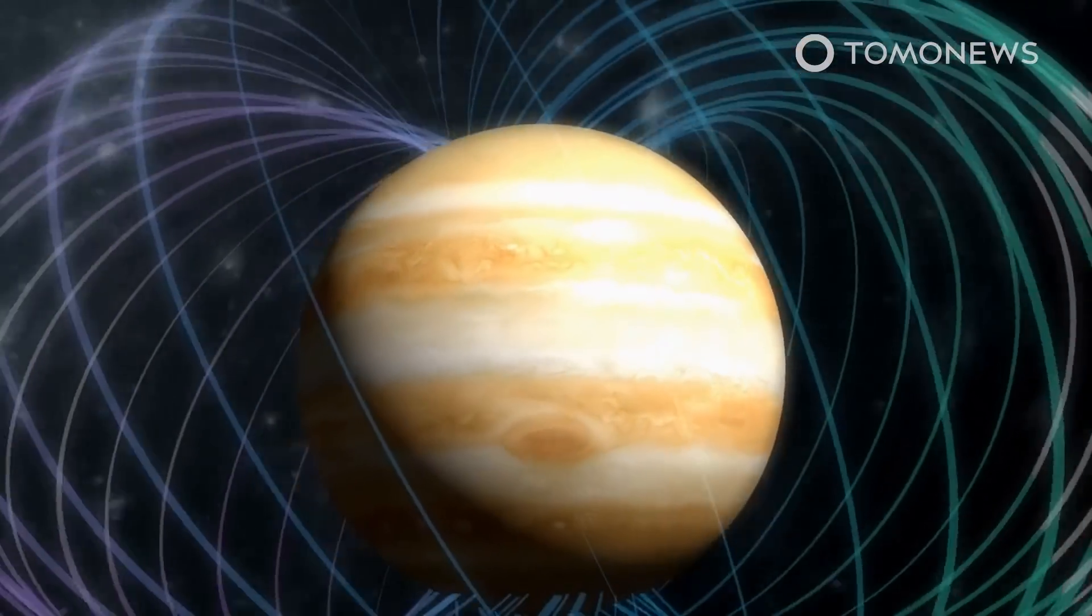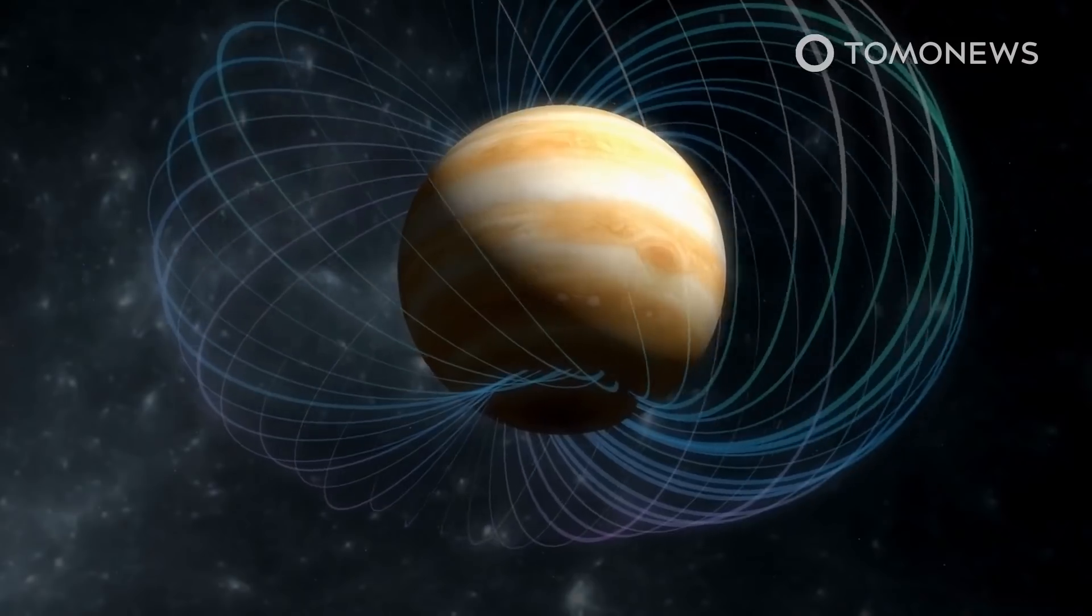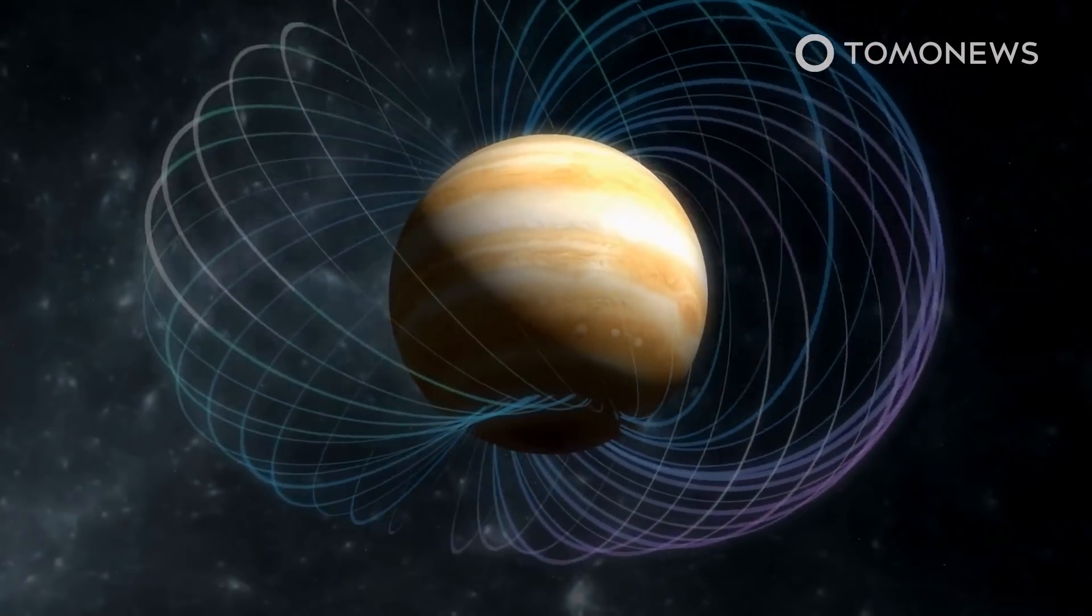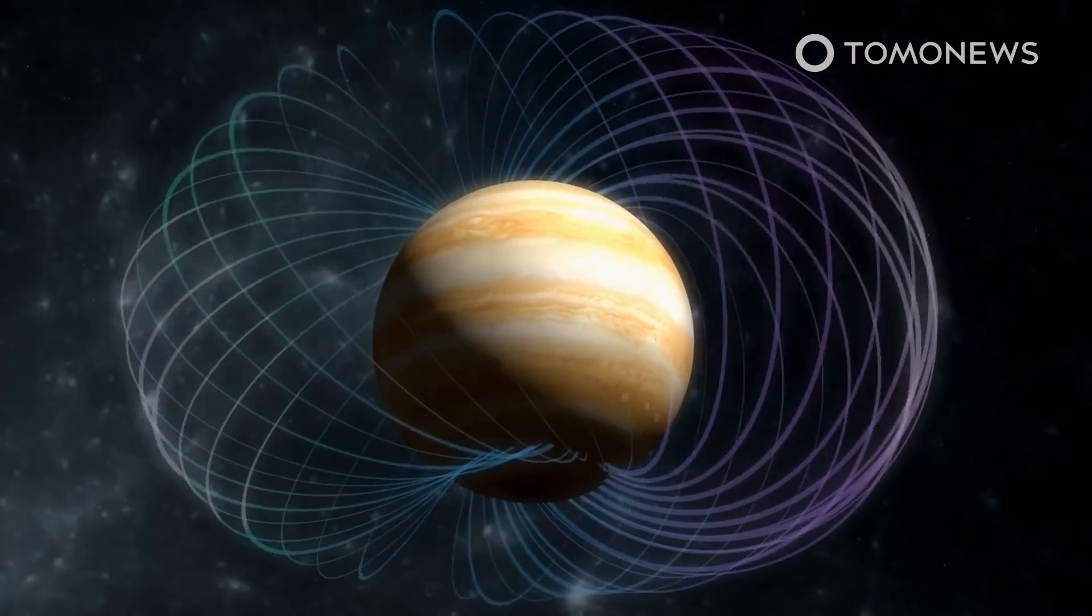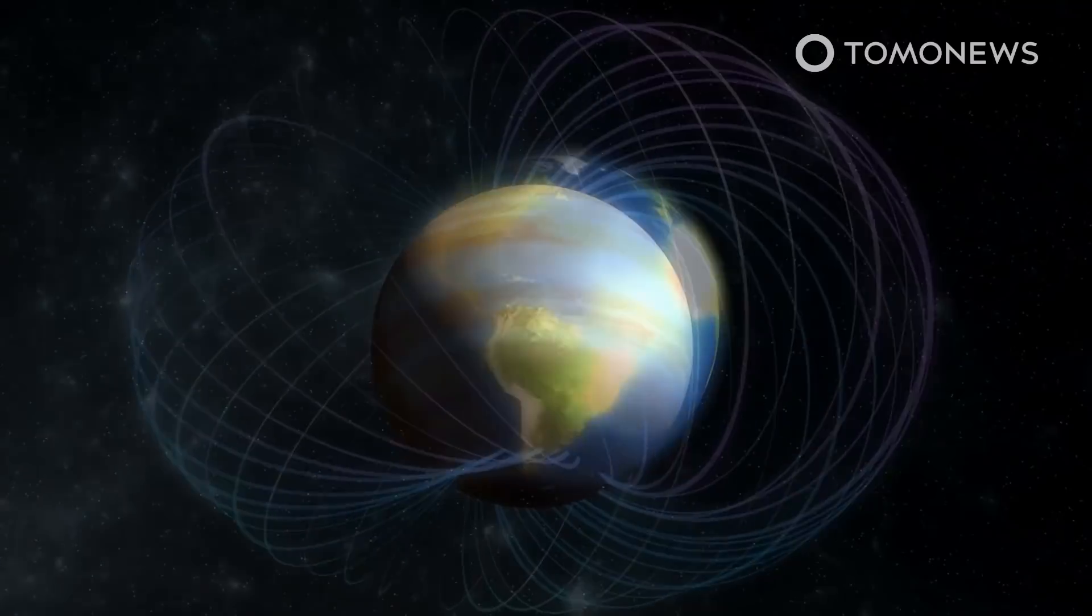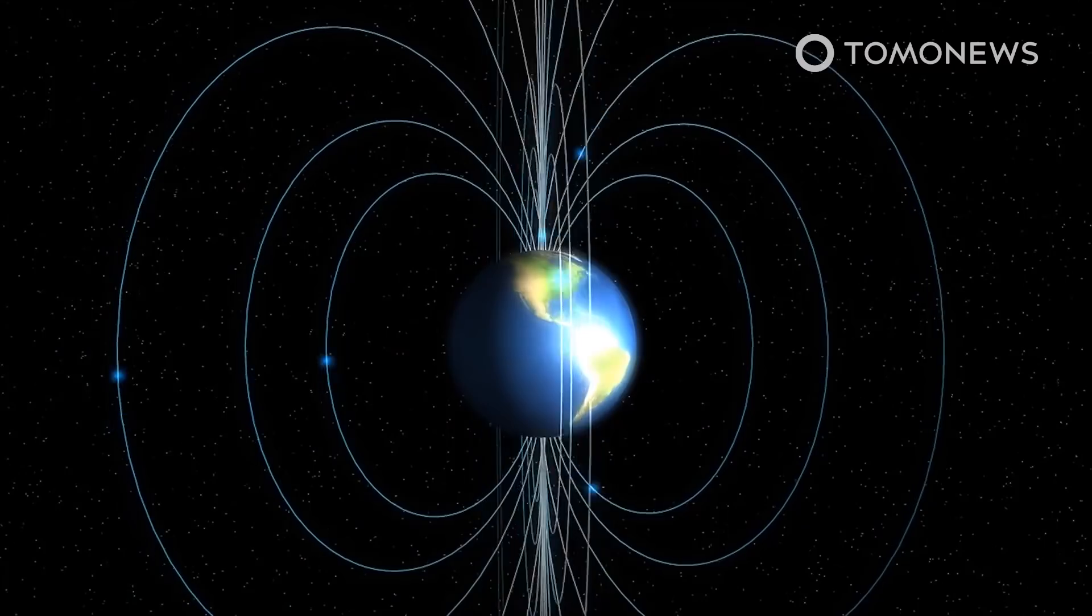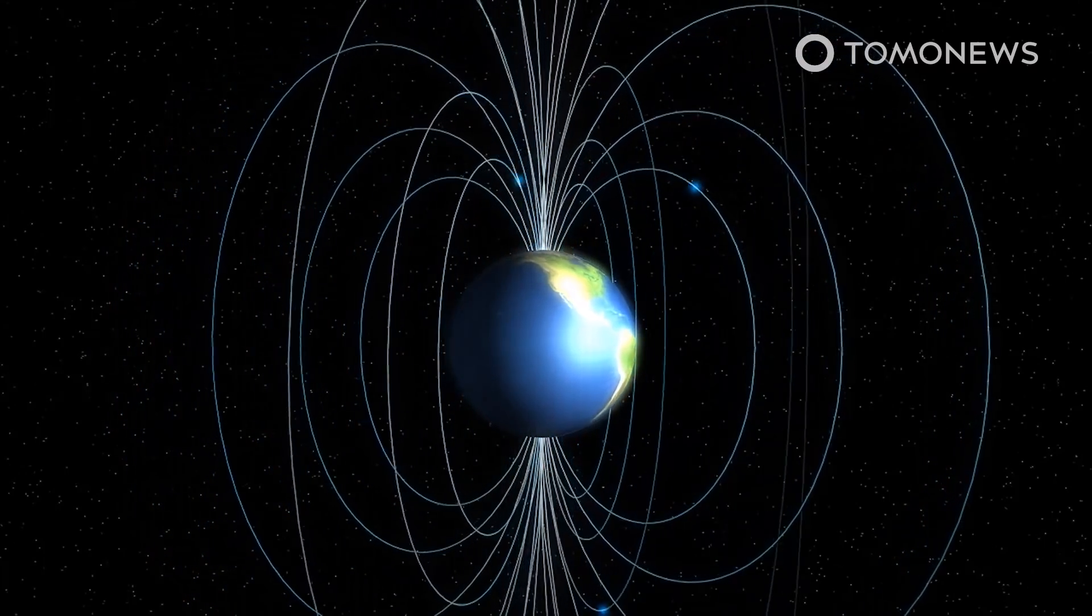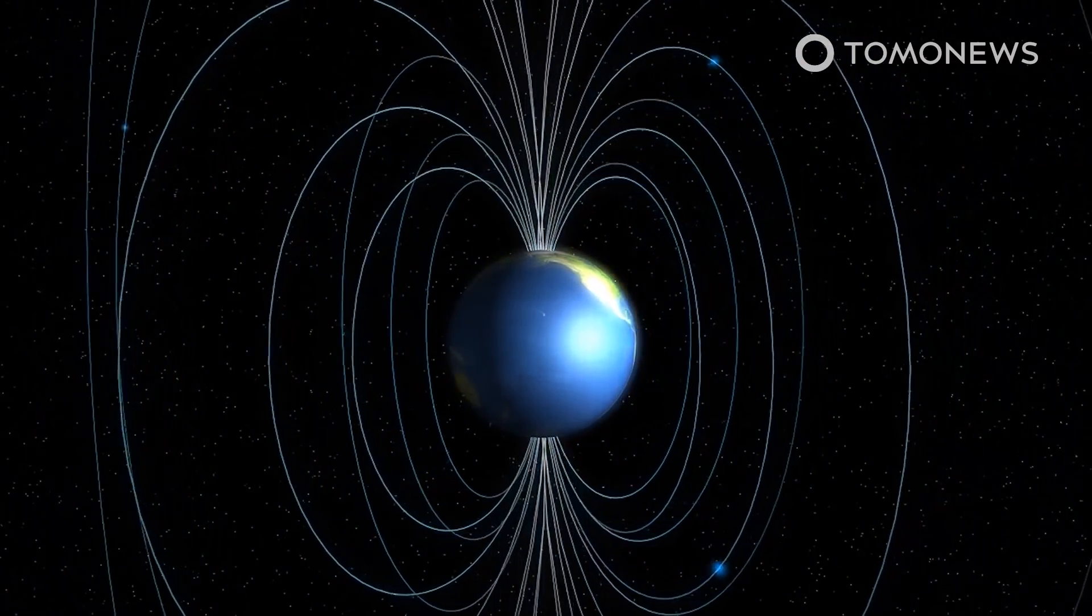If Mars did have a global magnetic field, it would have provided some shielding to protect its surface from the damaging radiation that constantly rains down from space, making the planet extremely inhospitable. Earth's rare magnetic field is one of the many amazing reasons why life is possible on Earth.